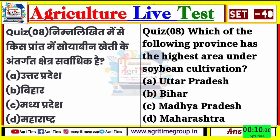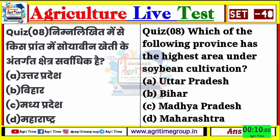Quiz number 8 का right answer होगा option number C - मध्यप्रदेश। मैंने अभी question number 3 में पूछा था कि कौन सा राज्य सबसे ज़्यादा दालों का उत्पादन करता है - मध्यप्रदेश करता है। जो generally बात है, सभी इनकी खेती के अंतर्गत सर्वाधिक क्षेत्र भी मध्यप्रदेश में होगा।